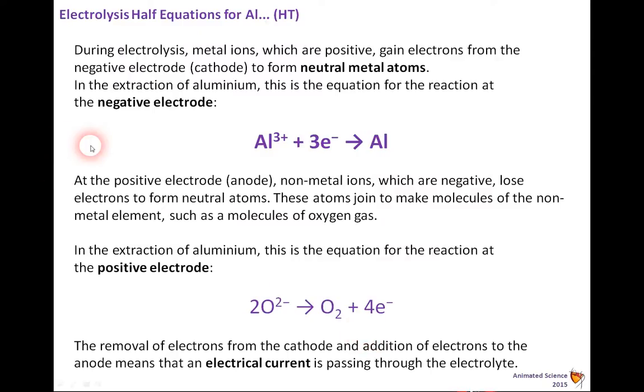Now, especially for higher tier, you need to know the half equations. So during electrolysis, the metal ions, which are positive, gain electrons from the negative electrode or cathode to form neutral metal atoms. So the equation at the negative electrode is aluminium three plus, because that's what normally forms, plus three electrons to balance the positivity three, negativity three, produce aluminium.